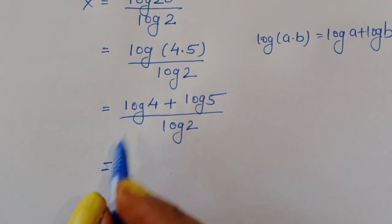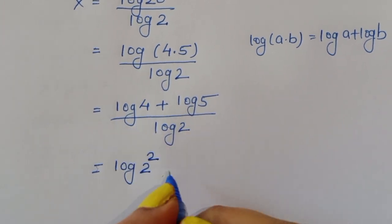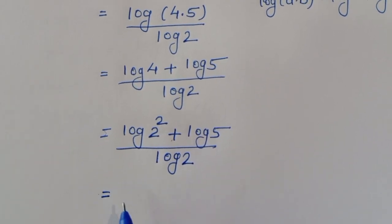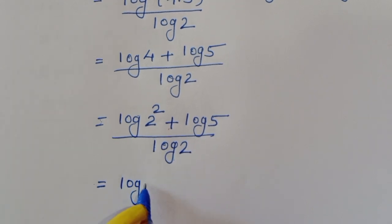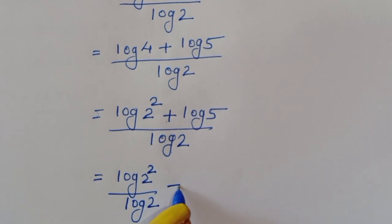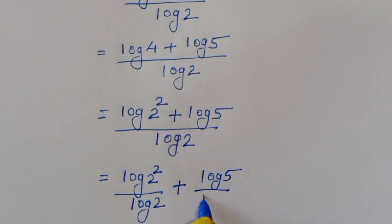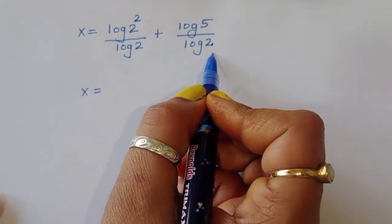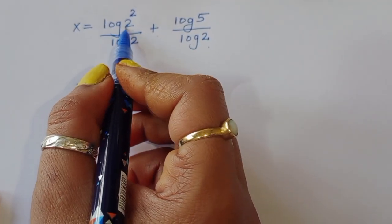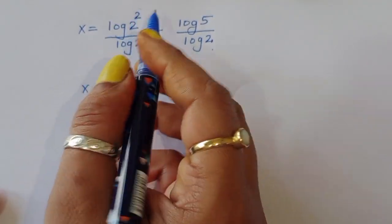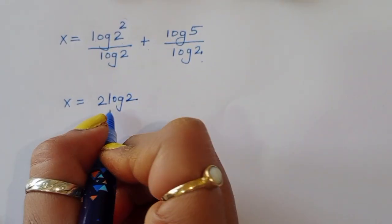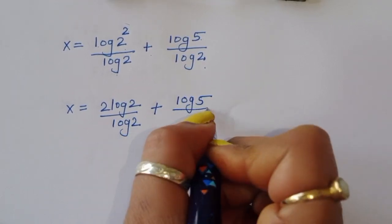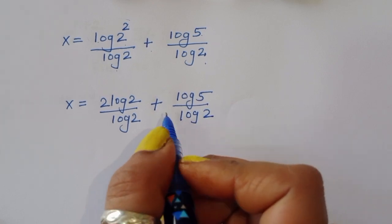Now log 4 — we can write 4 as 2 squared — so this becomes log of 2 squared plus log 5, divided by log 2. We separate the terms: log of 2 squared divided by log 2, plus log 5 divided by log 2. Using the formula log a power b equals b times log a, we write 2 times log 2 divided by log 2, plus log 5 divided by log 2.